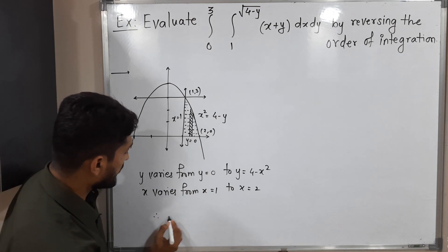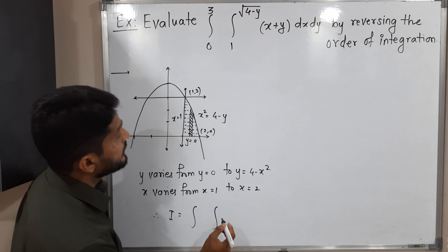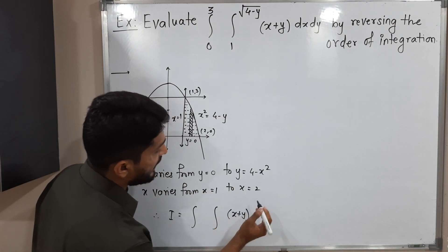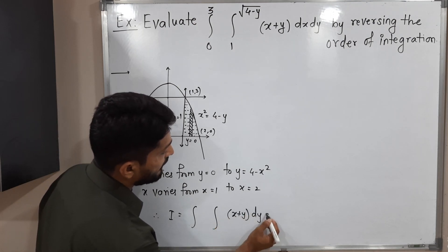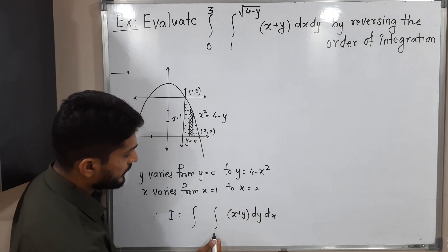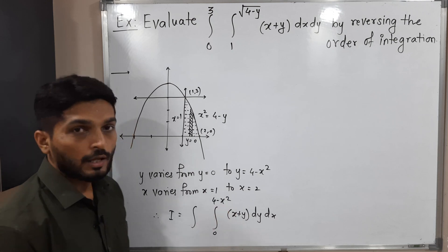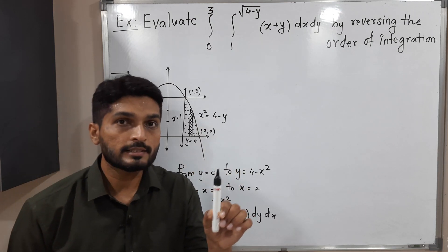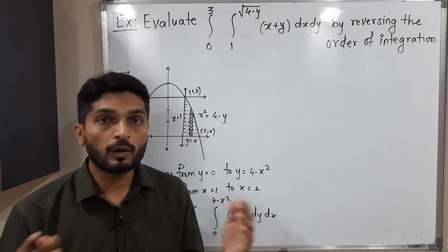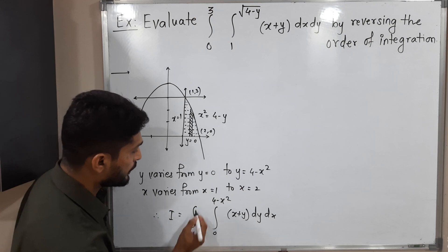Therefore, the integral I equals the double integral with limits: inner integration with respect to y from 0 to 4 minus x squared, and outer integration with respect to x from 1 to 2, of (x plus y).